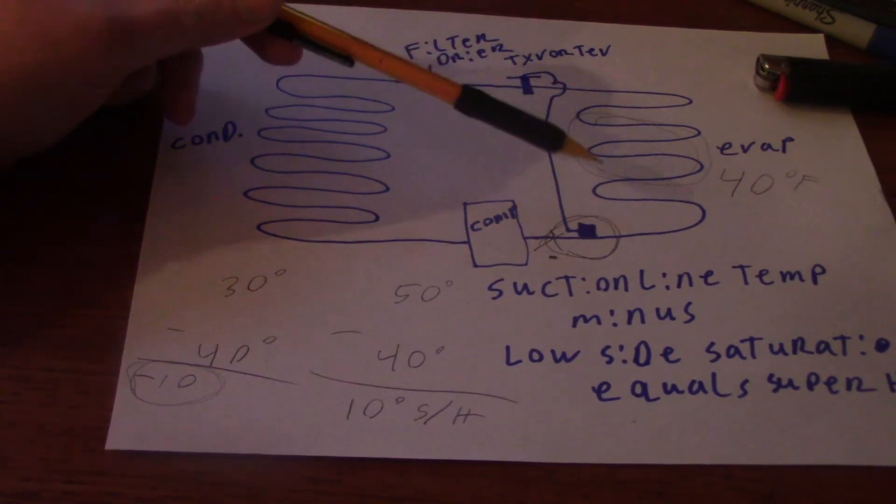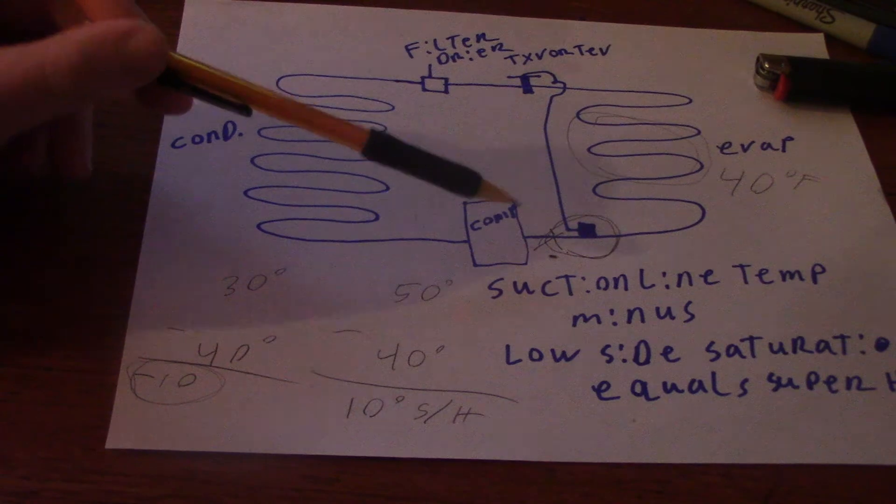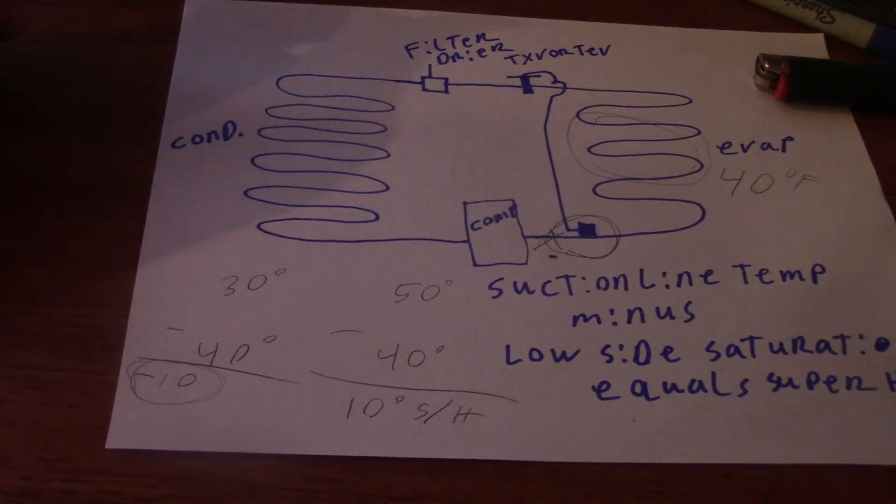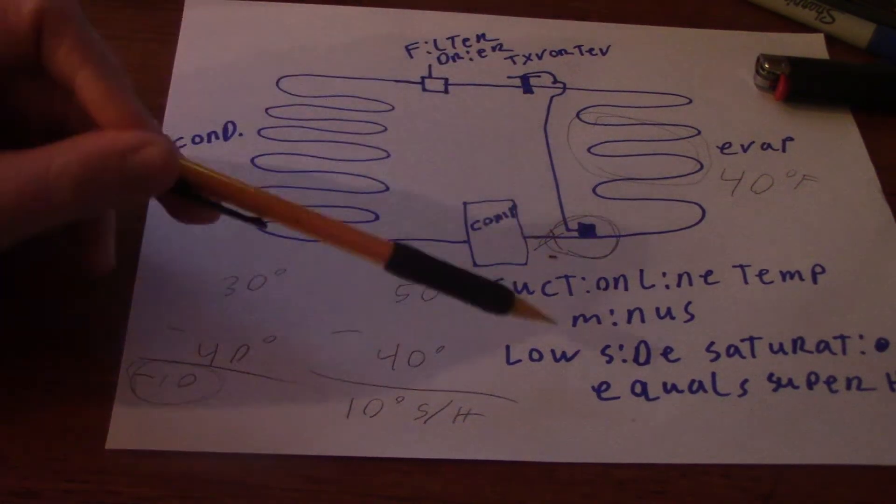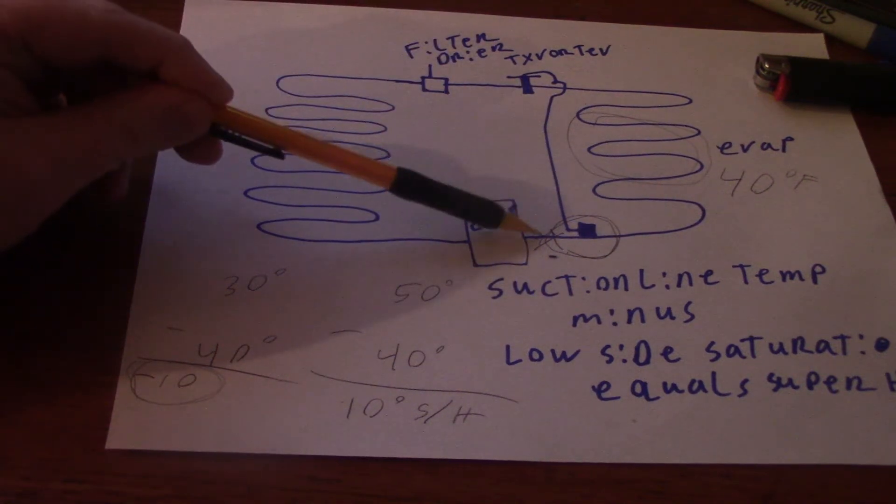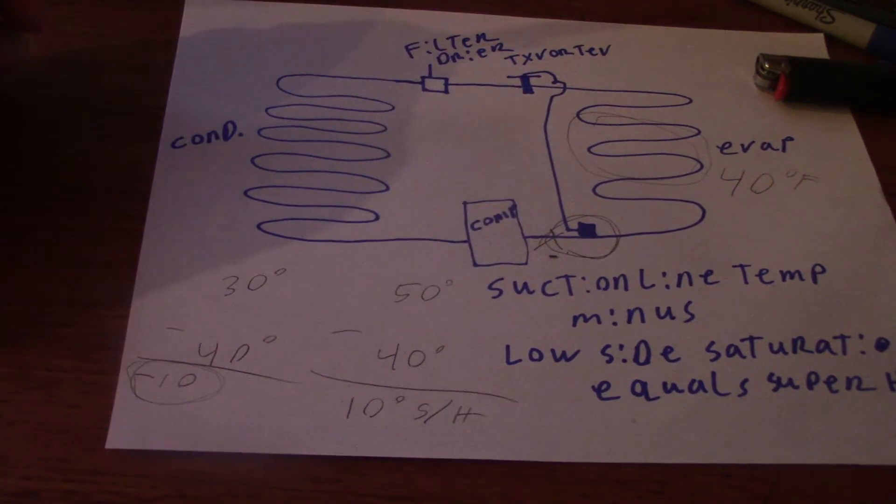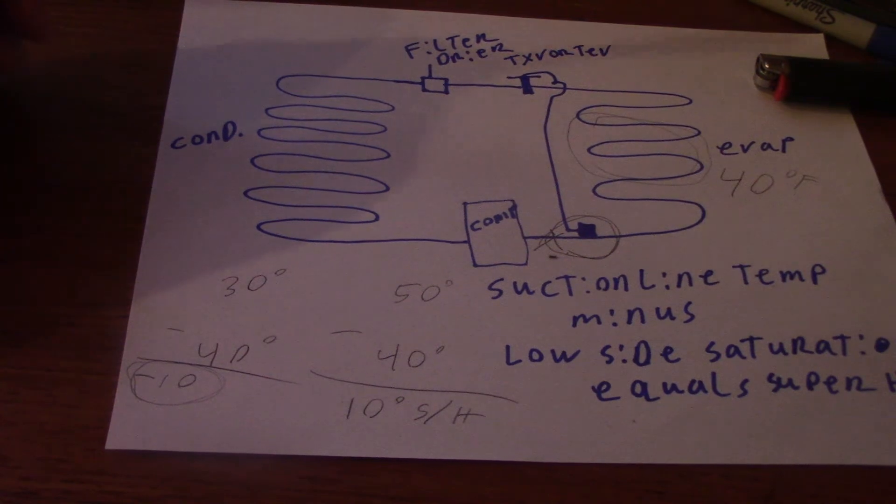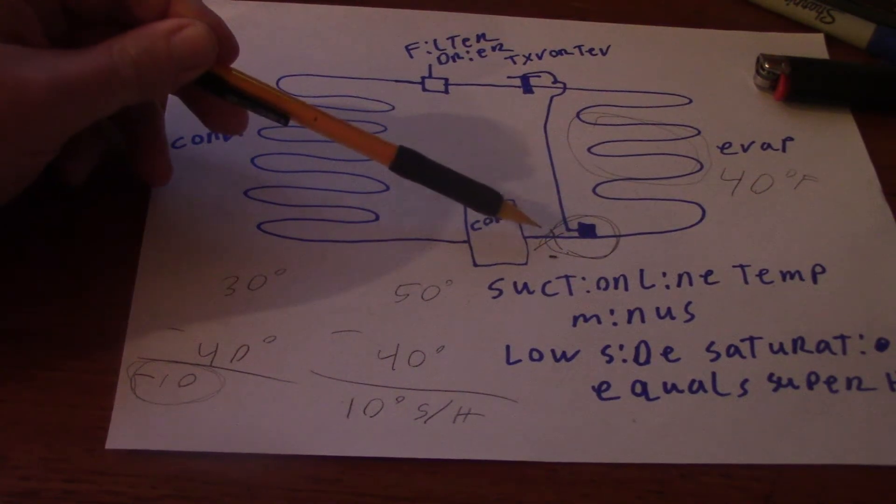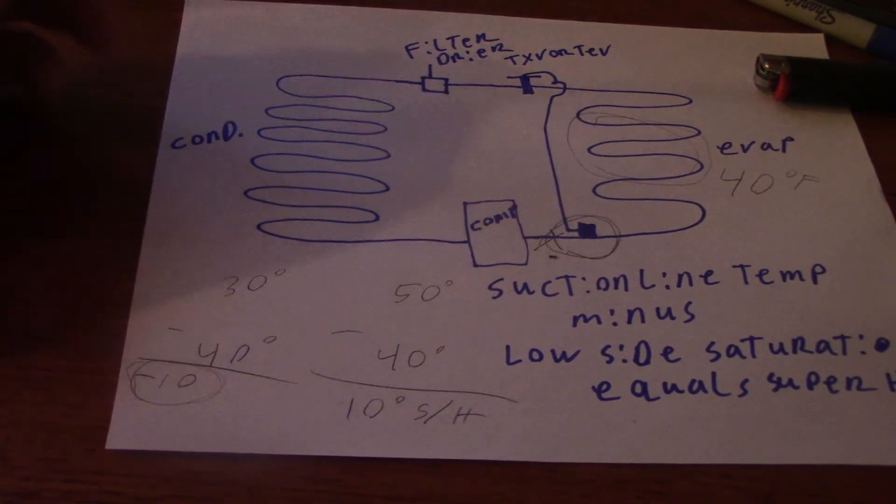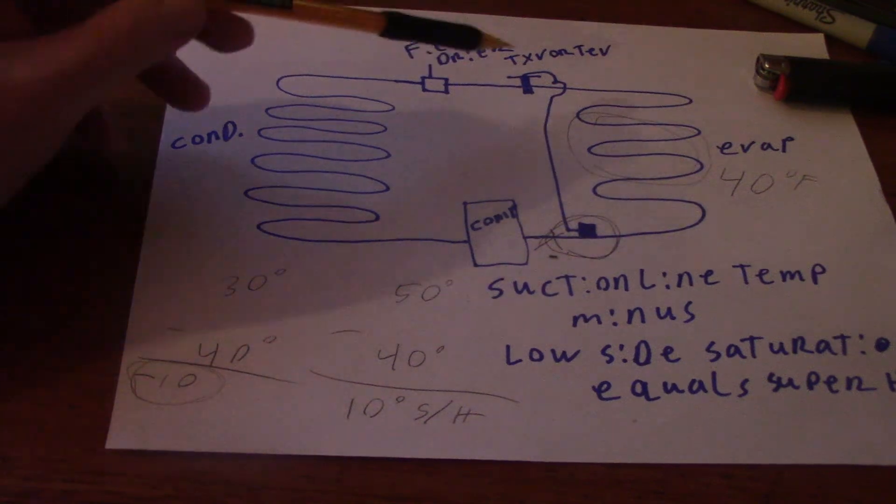If you had, let's say, a superheat of 5 right there, you could have a grossly overcharged system, hence the low superheat. If the superheat right here was, let's say, 30 degrees, you would have too high of superheat, and that would mean you're either undercharged, or you have a big load on the evaporator.